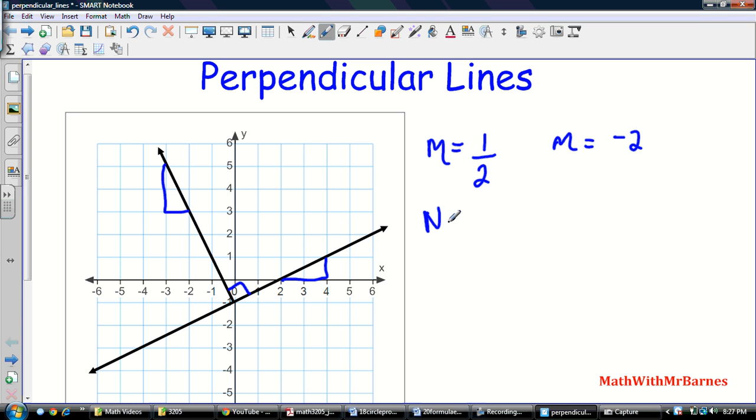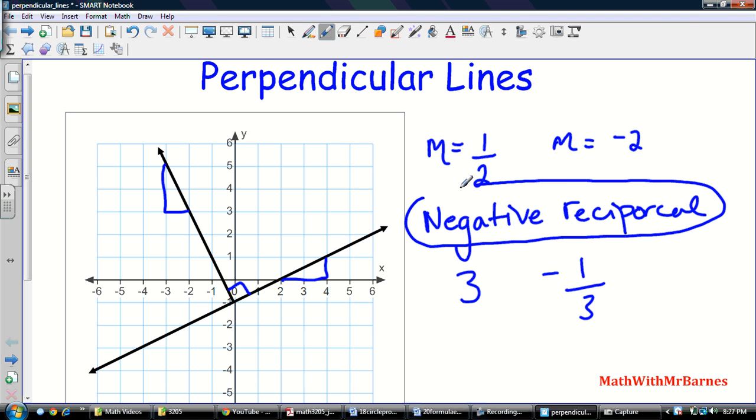These are negative reciprocals. All a negative reciprocal is—if we started with a number, let's just choose a different example—let's say 3. If the lines are perpendicular, then they're negative reciprocals, so we flip the fraction so it becomes 1 over 3, or 2 over 3 becomes 3 over 2, and we make it negative. So if we have the slope of one of these lines, we know the slope of the other just by knowing that we can use this fact right here.